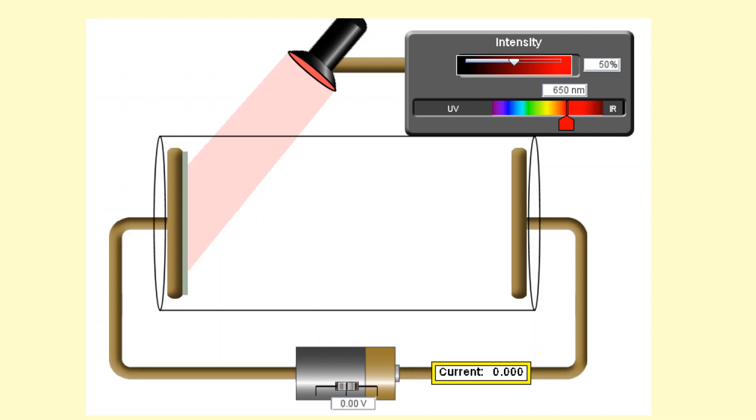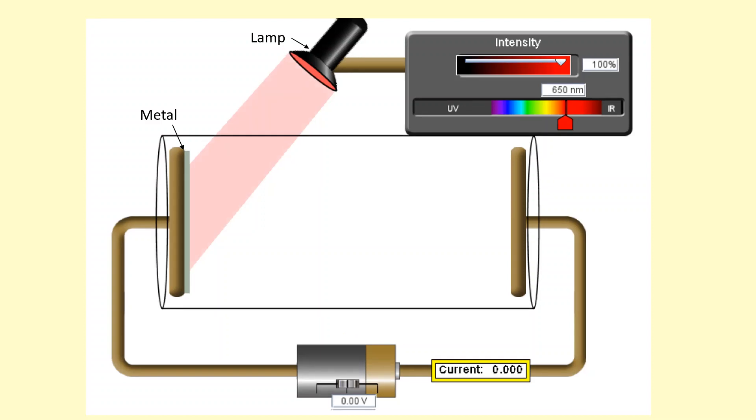This diagram shows a photocell. I'm using a lamp here to shine light on a metal surface that's attached to a circuit. This battery here isn't actually on at the moment, it's just used to complete that circuit there.